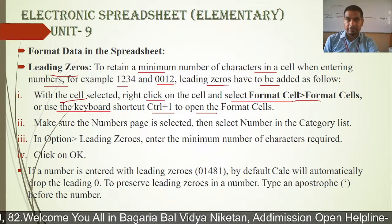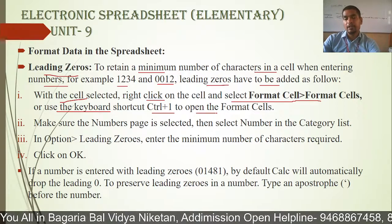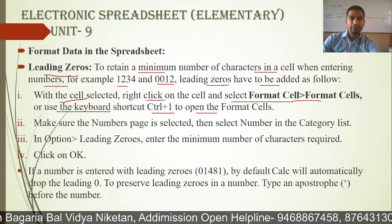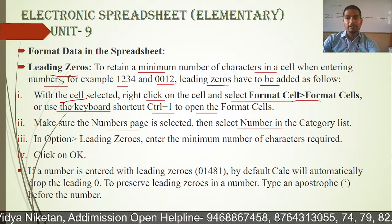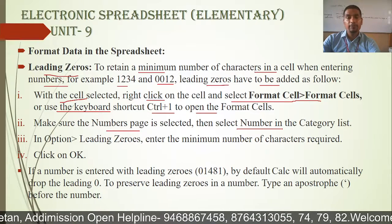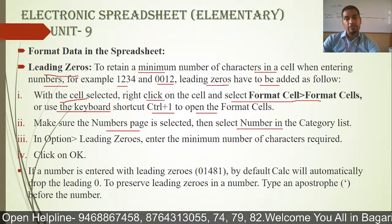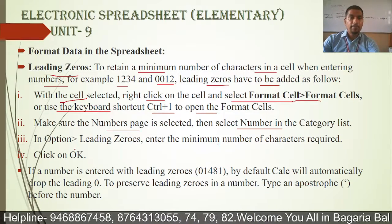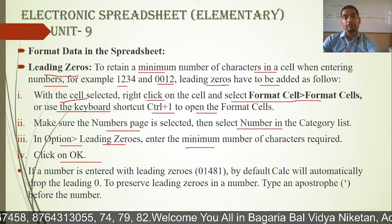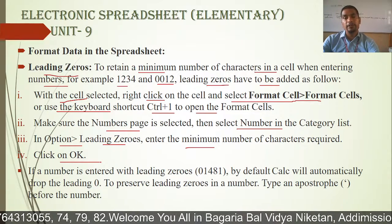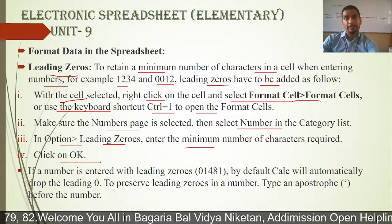First, select your cell. After that, open the Format Cell dialog box — the shortcut is Control+1. Make sure the number page is selected, then select Number in the category list. When you see the number page, you will get it selected and then select the number category. In the options, set the leading zero to the minimum number of characters required, then click OK. You can specify the minimum number of zeros with the character.